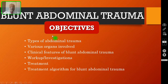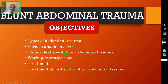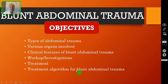The objective of my lecture is that after watching this video, all of you should be able to understand what are the different types of abdominal trauma and what are the various organs involved, what are the clinical features in case of blunt abdominal trauma, what workup or investigations you must do to clinch the diagnosis, and what treatment or how to manage these patients. At the end of the video I have also included a treatment algorithm for blunt abdominal trauma — only for the overall management approach, not individual organ injuries.